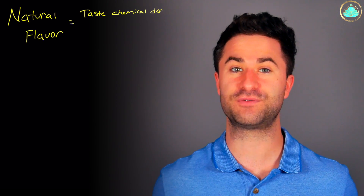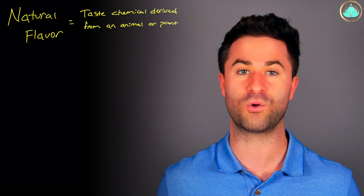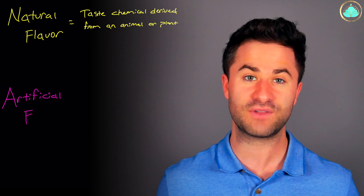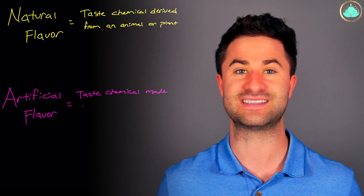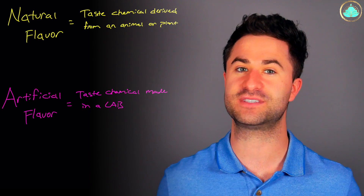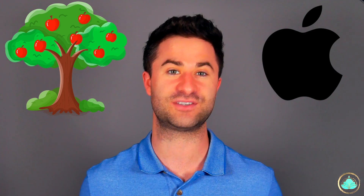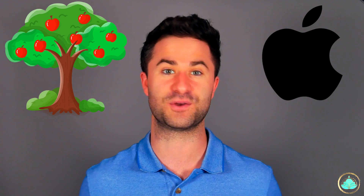By definition, a natural flavor is any flavoring chemical that is derived from either a plant or an animal product, and an artificial flavor is any chemical flavoring that is synthesized in a lab. Natural flavor does not mean that the flavor you're tasting actually came from the thing it's supposed to taste like. Back to our apple example, if you're eating something that tastes like an apple but there aren't any actual apple products in the ingredients list, there's a very high chance that the apple flavor you're tasting isn't from an apple at all.